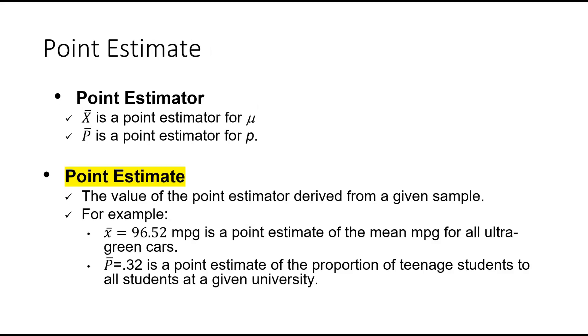So we've got the point estimator. I just want to point out that your textbook uses capital P-bar, but what I use and what most textbooks use is P-hat, and you'll also see lowercase P-bar. These are all the same symbol. X-bar is the sample mean, and P-hat is our sample proportion. The value of the point estimator is derived from the given sample. For example, X-bar equals 96.52 miles per gallon is the point estimate of the mean for all green cars. P-hat 0.32 is the point estimate of the proportion of teenage students to all students in a given university.